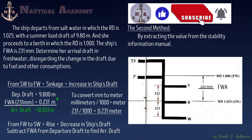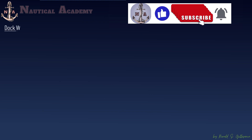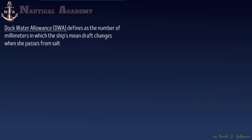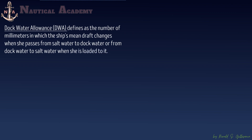Let us proceed to dockwater allowance. Dockwater allowance is defined as the number of millimeters by which the ship's mean draft changes when she passes from saltwater to dockwater, or from dockwater to saltwater, when she is loaded to her summer displacement. Here are some examples of how to calculate the dockwater allowance.